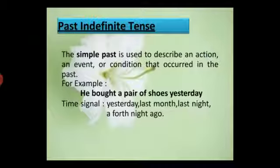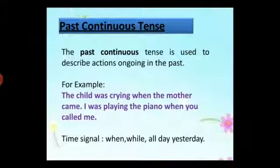Past continuous tense is used to denote actions that were continued in the past. This tense is used to denote incomplete actions — either stopped because of an interruption, or actions that continued before and after another event. For example: 'The child was crying when the mother came' and 'I was playing the piano when you called me.'